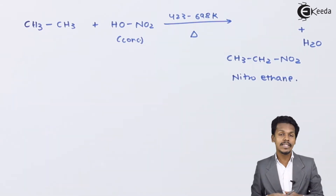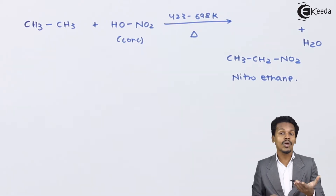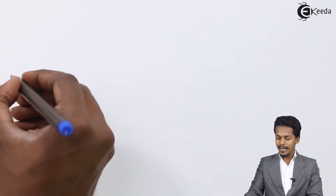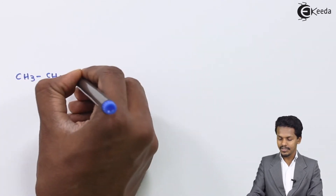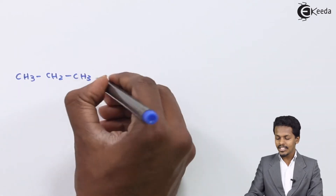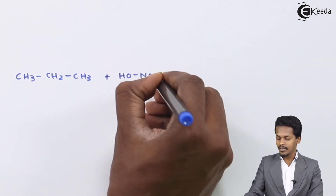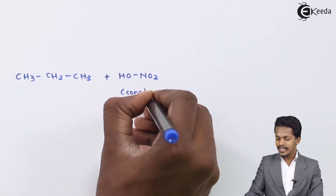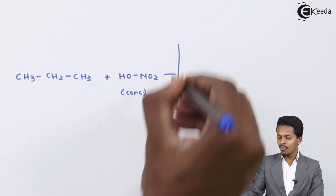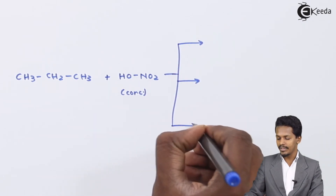But what if we consider propane? Suppose propane undergoes the nitration process — what is the product we could get? Let us understand that. Propane can be written as CH3CH2CH3. Suppose we are doing direct nitration on it by introducing concentrated HNO3. In this case, the product we could get would be a mixture of products.